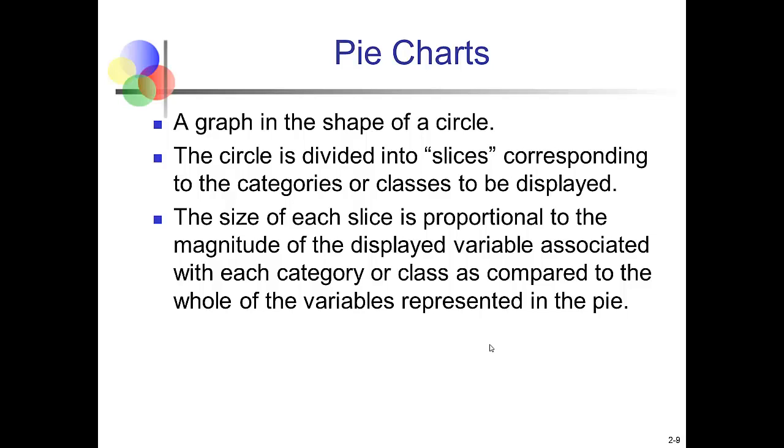Pie charts, you know, are a graph that's in the shape of a circle. Each slice of the pie corresponds to a category or a class that we're trying to display. The size of the slice of that pie is really supposed to represent how big that class is compared to the whole. So when we do a pie chart, all the slices of the pie should make up the whole. And each slice of the pie should represent proportionally how big that slice of the pie is.